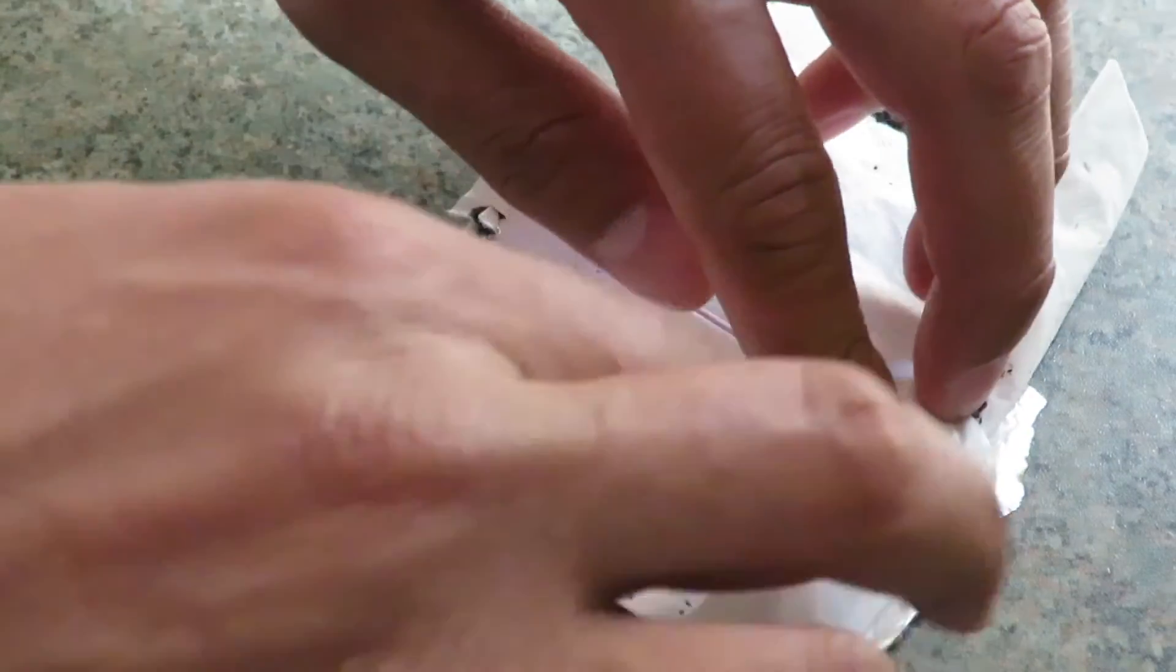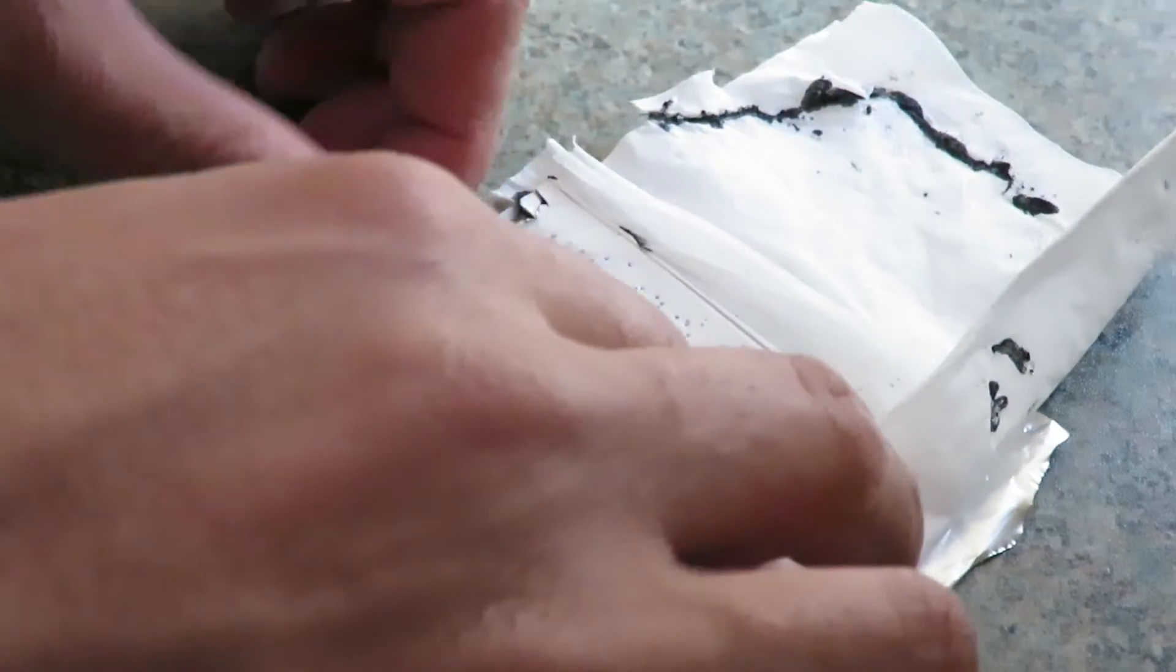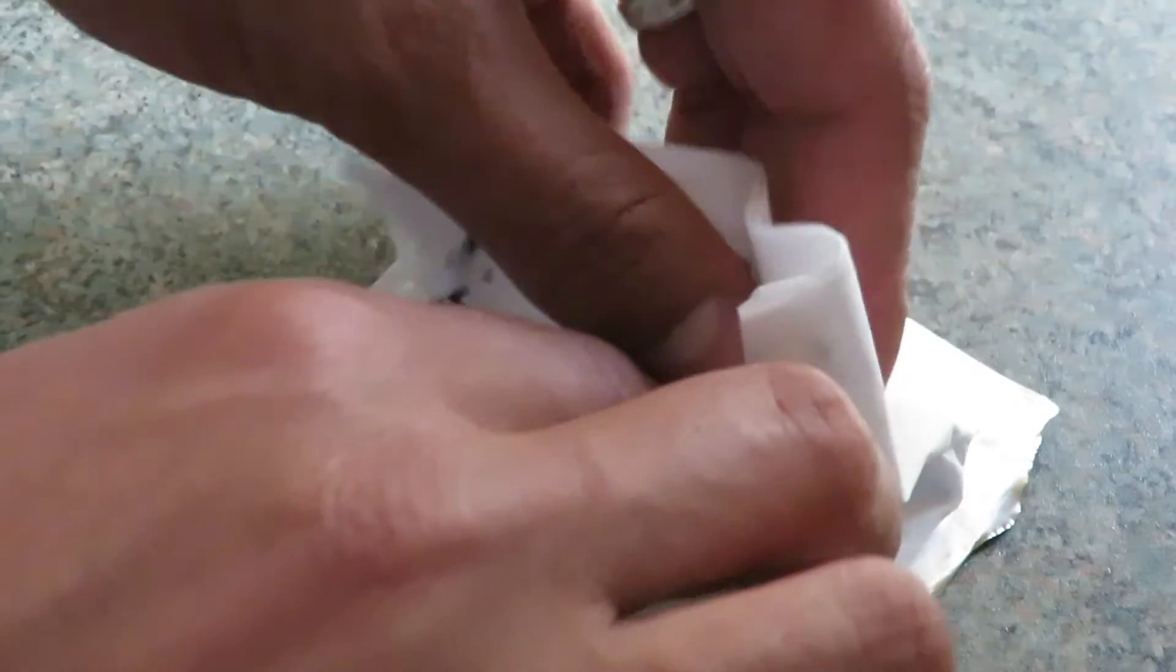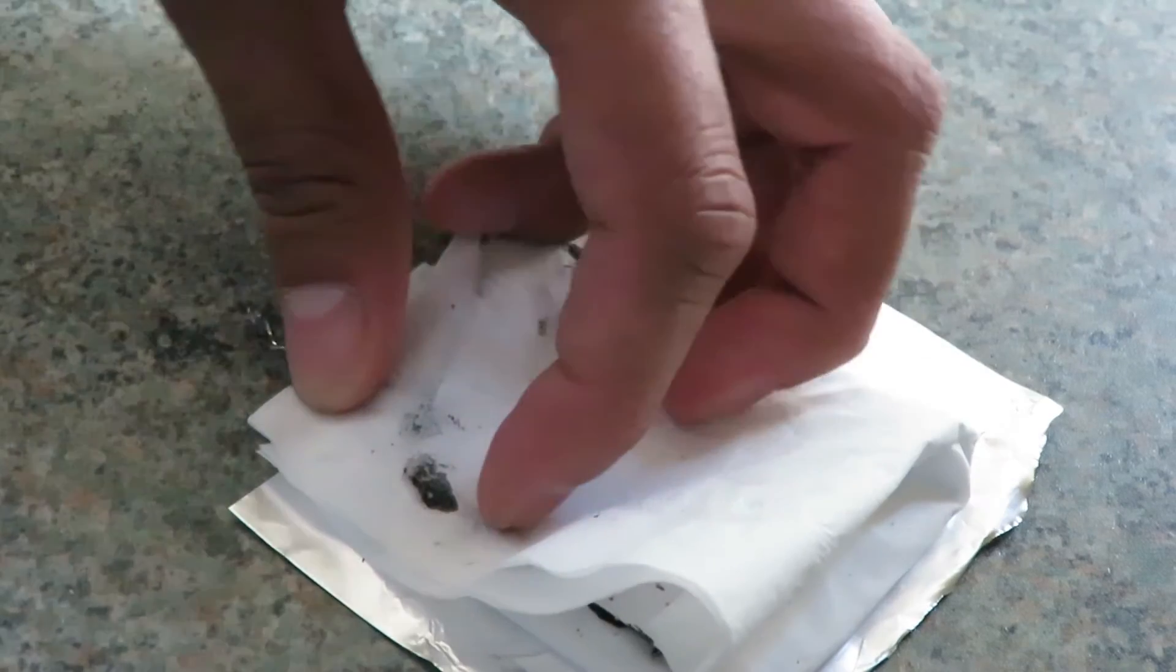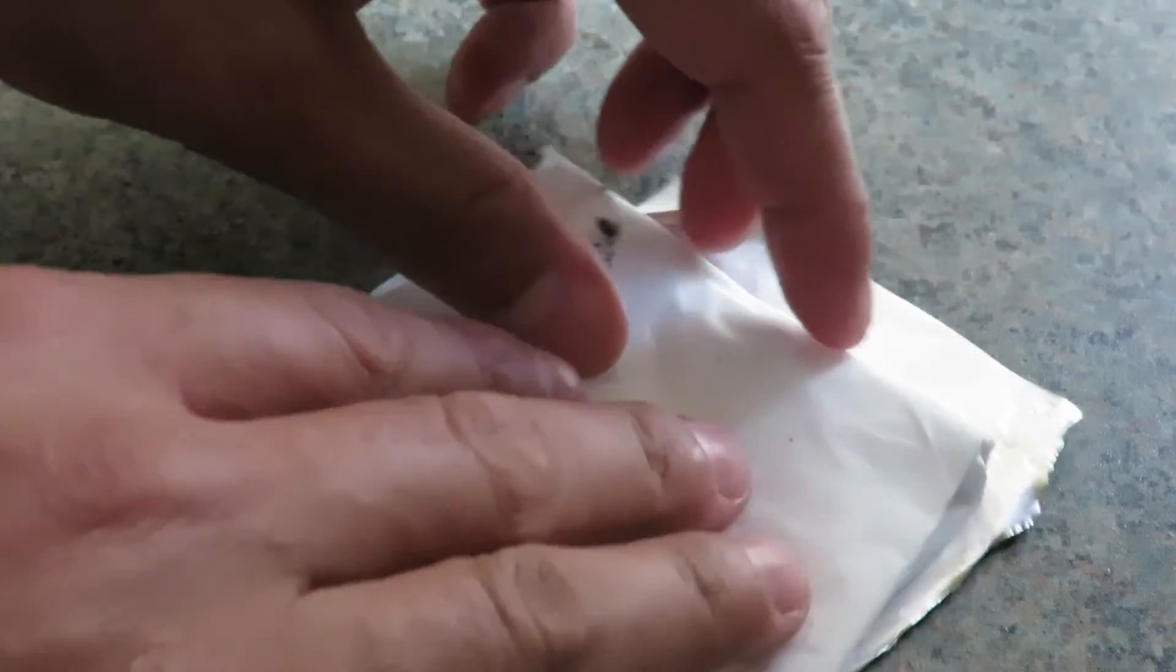Wrap it well around it. Make sure you do not get the wire or the carbon to touch the aluminum. You have two electrodes, they have to be separated by the tissue, by this napkin.